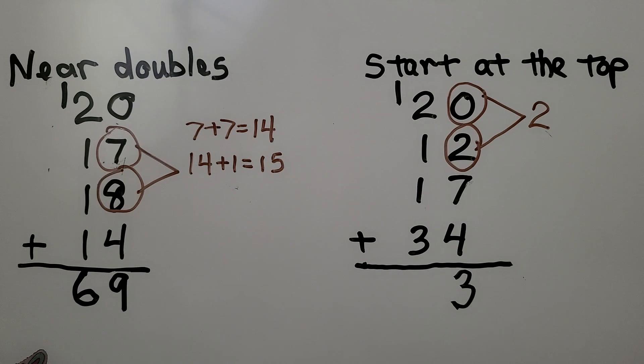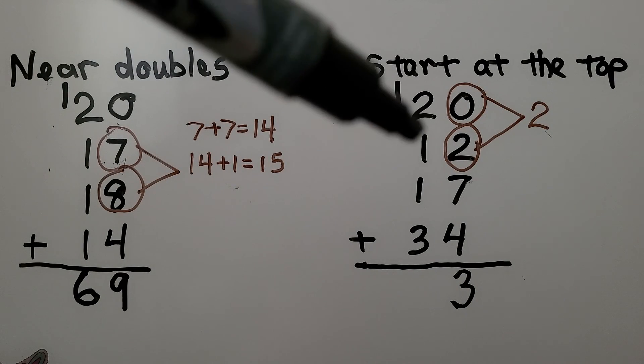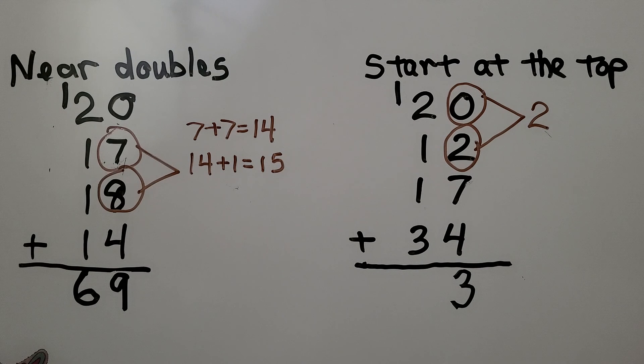13 is 1 ten that we regroup and 3 ones. Now we add the tens. We have 2 and 3 is 5, 6, 7, 8 tens. It's equal to 83.